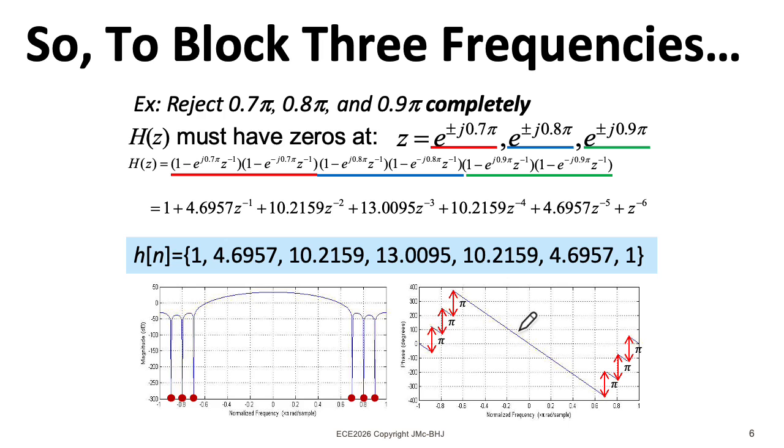Notice that the vertical axis here is in degrees. And the overall structure of the plot is that of a line. We will describe this as a linear phase filter. Don't let these little jumps of π throw you. If you can stitch together a line by collapsing out those jumps of π, you'll still call it linear phase.